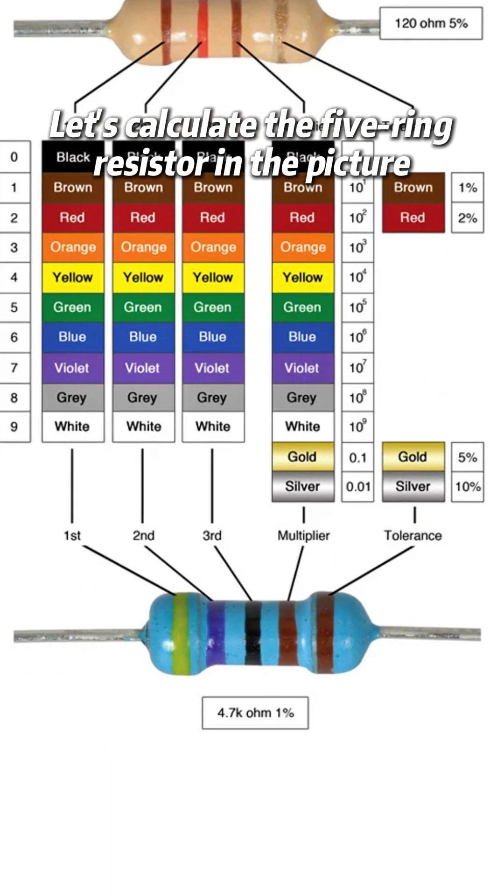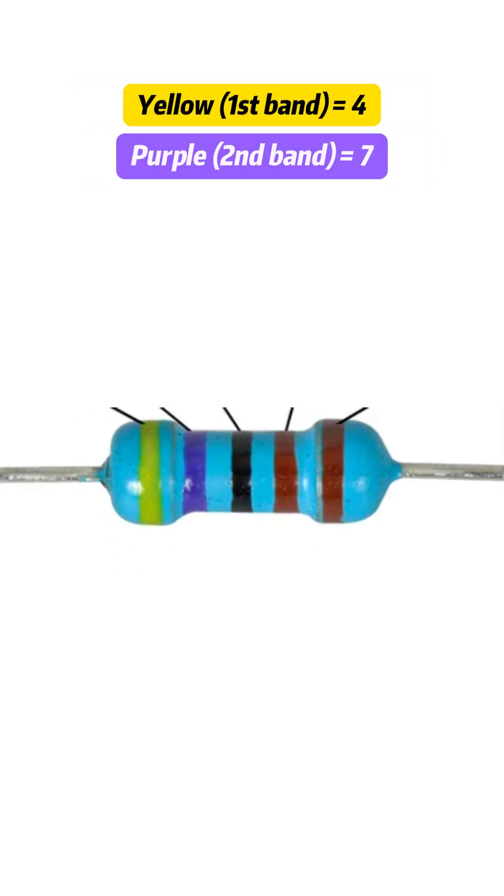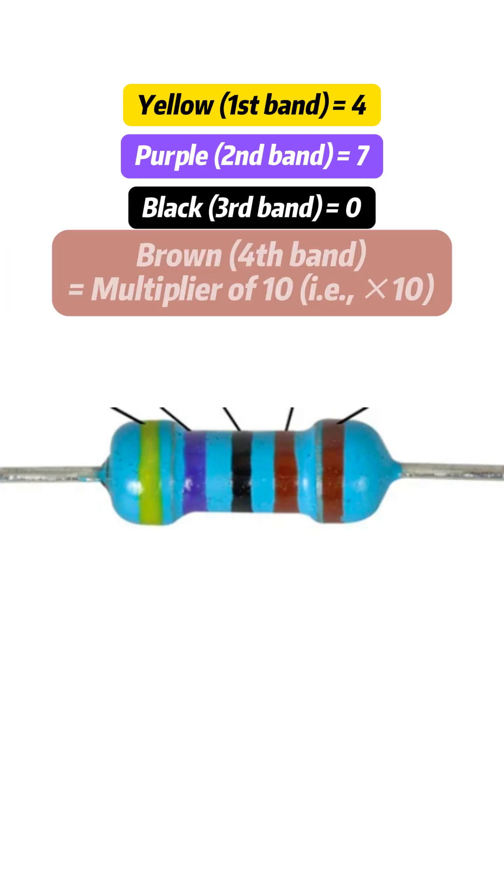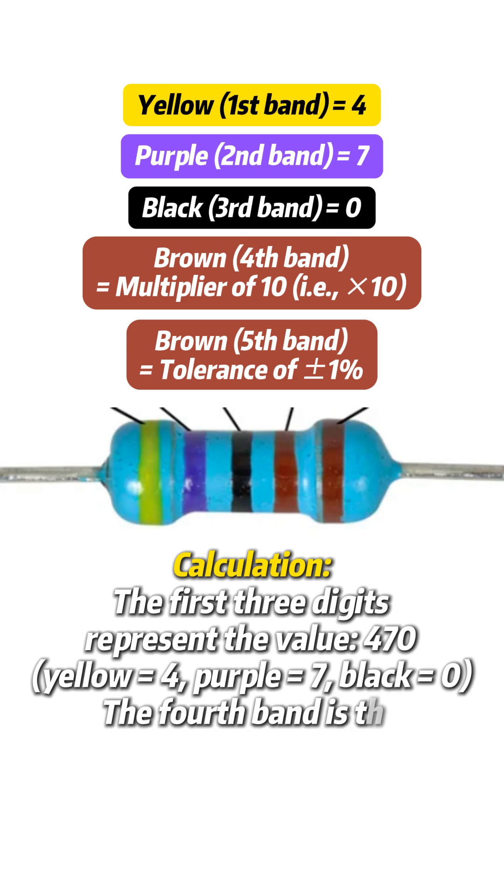Let's calculate the 5-ring resistor in the picture. Yellow equals 4. Purple equals 7. Black equals 0. Brown equals multiplier of 10. Brown equals tolerance of plus or minus 1%. Calculation: